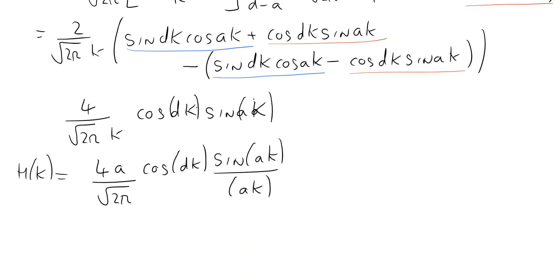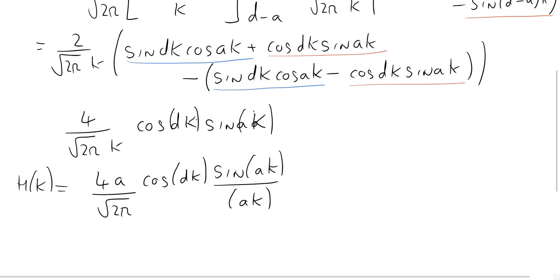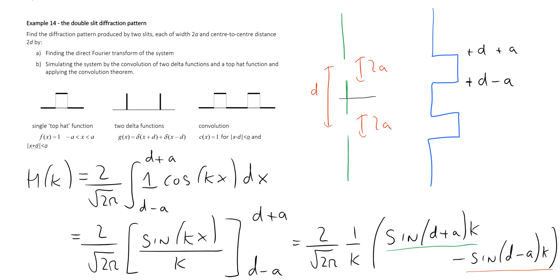Now we need to think about how we can model the double slits using two functions. We take a single top hat function — extending from minus a to plus a — and convolve it with two delta functions situated at minus d and plus d. Sweeping one function through the other, the convolution produces two top hat functions, which is exactly equivalent to the transmission function of our double slits.